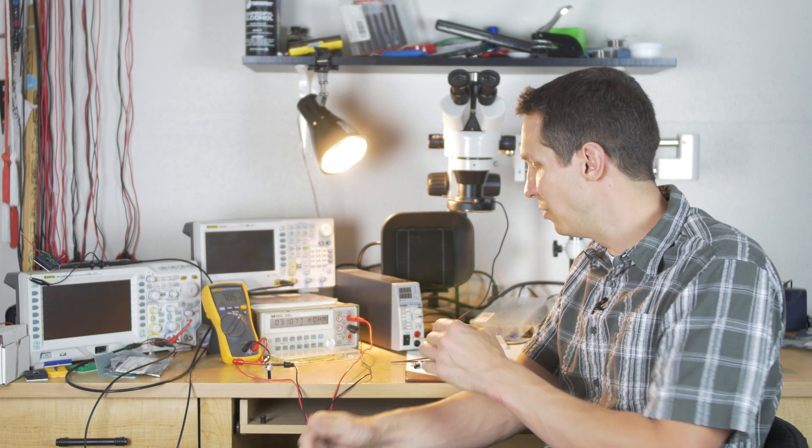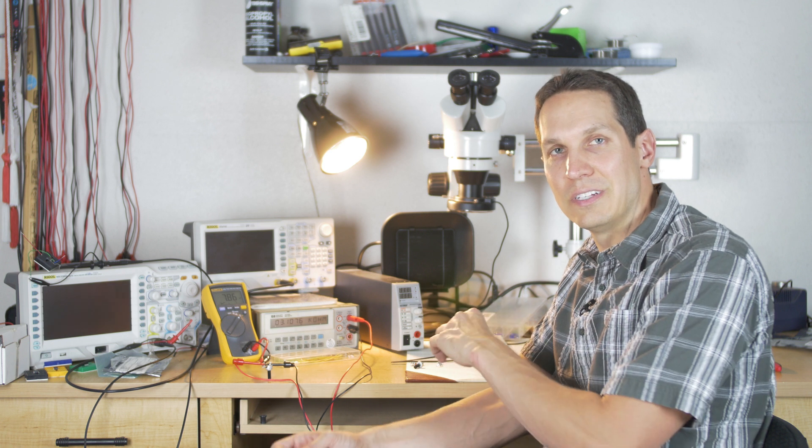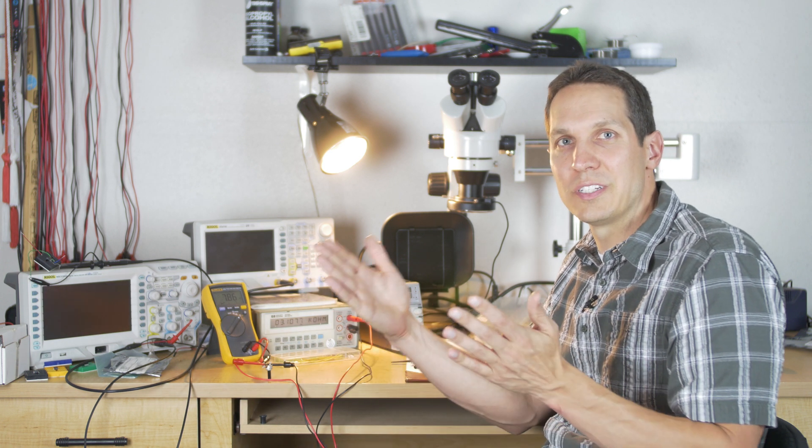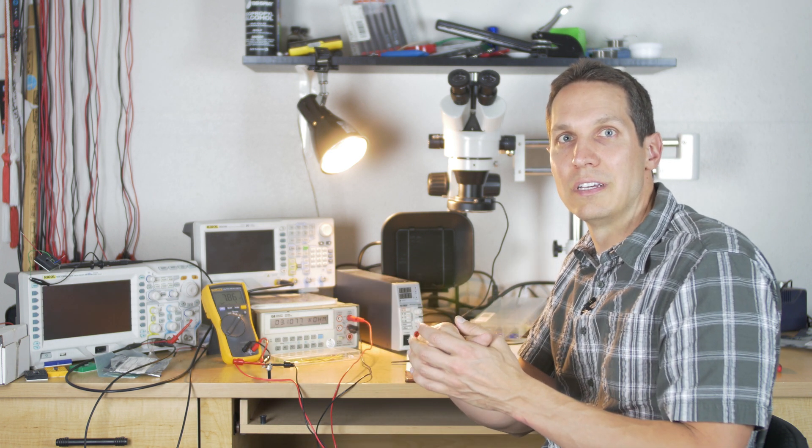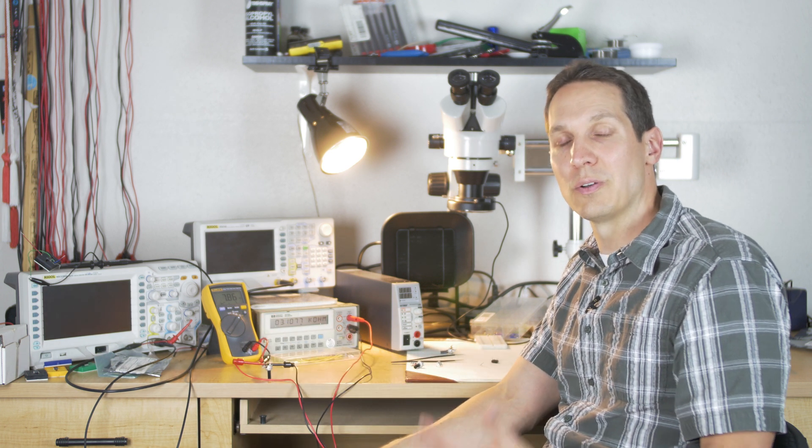Those are the two types of potentiometers and trimmers that you have - the mechanical where you're physically sliding around, and then the digital which is literally just opening and closing of switches. That's it, that's our basic overview of potentiometers and trimmers. I hope you found that interesting.